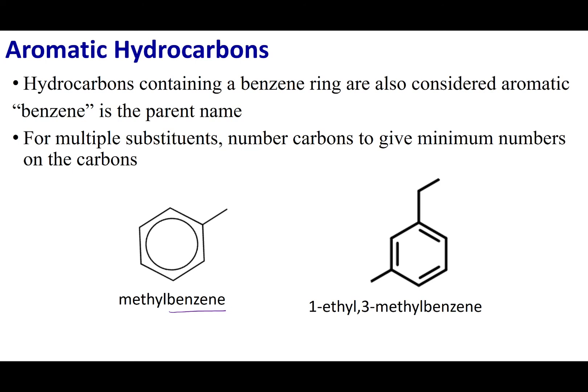If I put a substituent on benzene, like a methyl group, it becomes methylbenzene. If there are more than one substituent, use benzene as the parent name and follow all the naming rules to label the substituents and their positions on the ring.